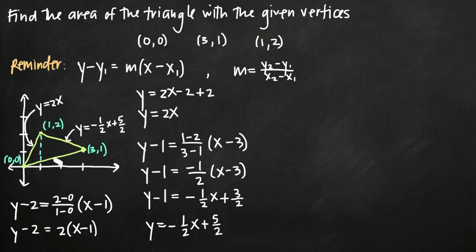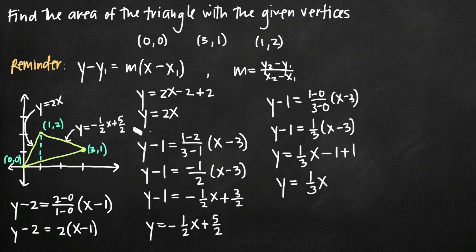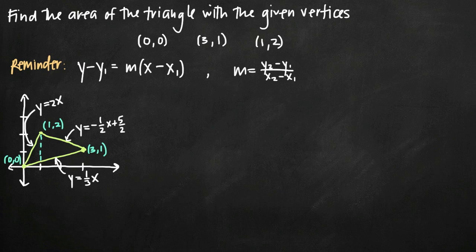The last side of the triangle goes from (0,0) to (3,1). Using point-slope form: y − 1 = (1−0)/(3−0) · (x − 3), so y − 1 = ⅓(x − 3), which gives y = ⅓x − 1 + 1, so y = ⅓x. This just becomes an area between curves problem.